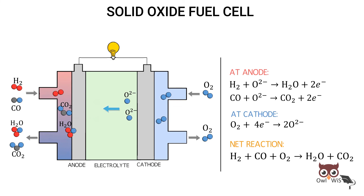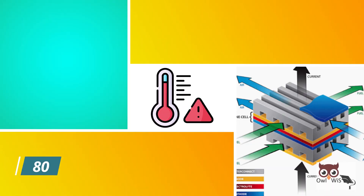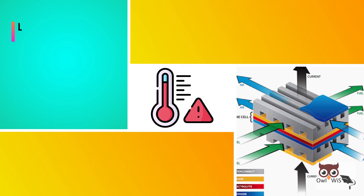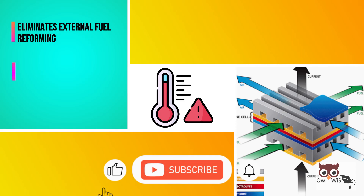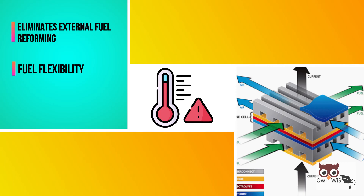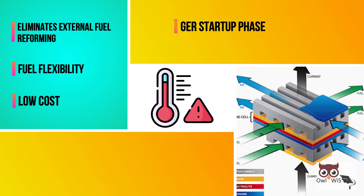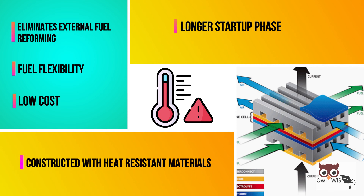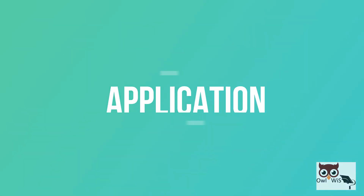SOFCs work at very high temperatures, around 800 to 1000 degrees Celsius. This high operating temperature eliminates the need for external reforming of fuel and allows the use of a variety of hydrocarbon fuels, also eliminating the requirement for precious metal catalysts, thus decreasing cost. However, high temperature operation causes a longer start-up phase, and they must be constructed with heat-resistant materials.